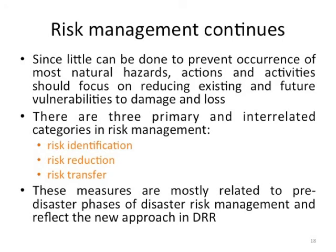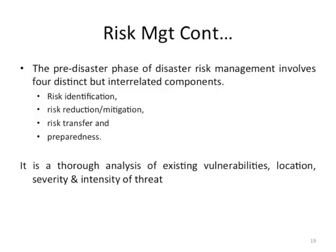There are three primary and interrelated categories of risk management: risk identification, risk reduction, and risk transfer. These are mostly related to the pre-disaster phases of disaster management. The pre-disaster phase involves four distinct but interrelated components: risk identification, risk reduction or mitigation, risk transfer, and preparedness.